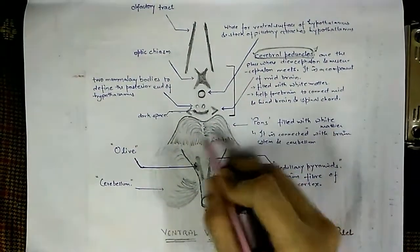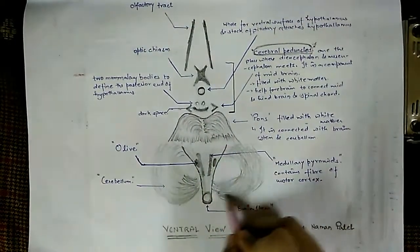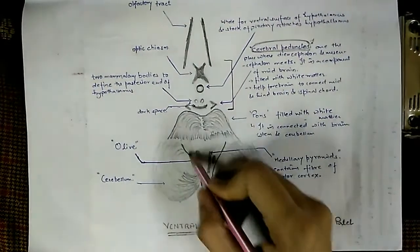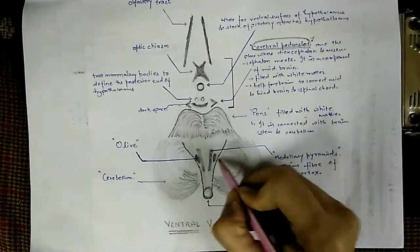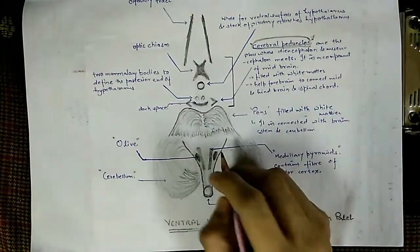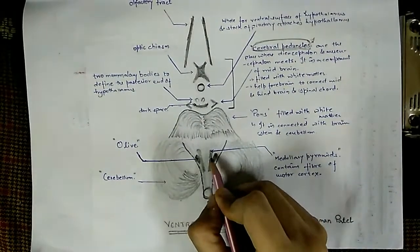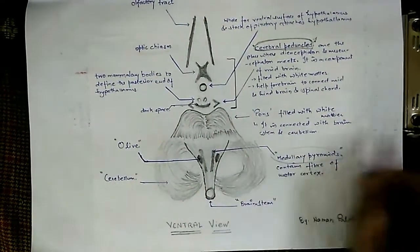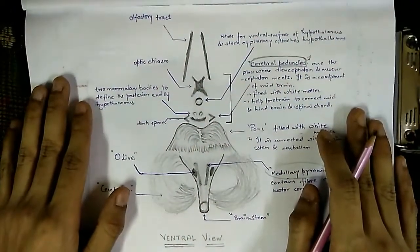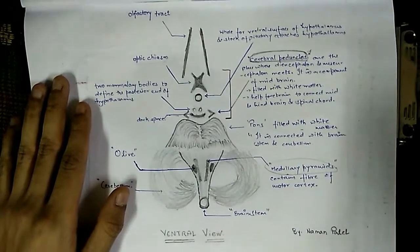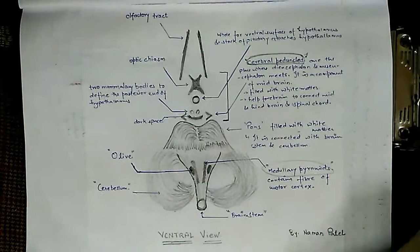Just below the cerebral peduncles we can see the pons, with the cerebellum placed laterally. Below that, two oval-shaped structures are the olives, and just medial to the olives we can see the medullary pyramids. That covers the introductory brain structures needed before discussing cranial nerve origins.